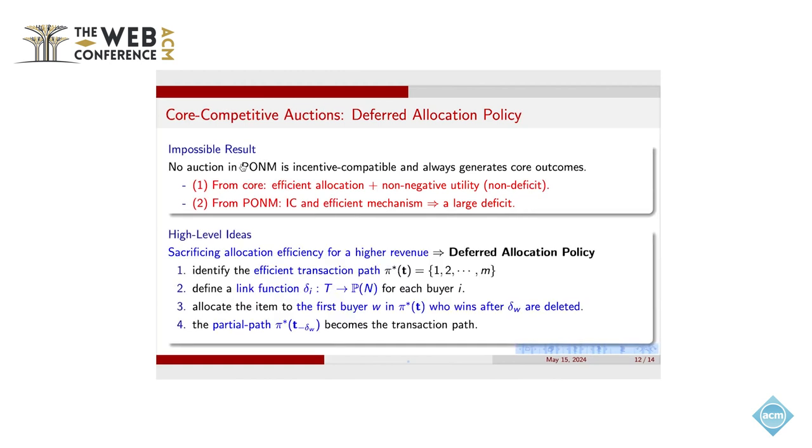So observing this bad result, how to design the mechanism for this market that still preserves IC and has good revenue. We need to sacrifice our allocation efficiency. That means we cannot focus on the core allocations. Then we define the deferred allocation policy.